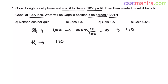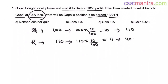Now Ram wants to sell it back to Gopal at 10% loss. 10% of 110 is 110 × 10/100, which equals 11 rupees. So he wants to sell it at a 11 rupees loss, that is 110 − 11 = 99 rupees. So Ram wanted to sell it back at 99 rupees.